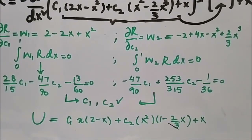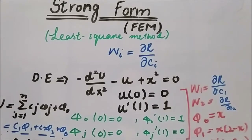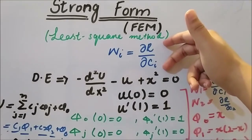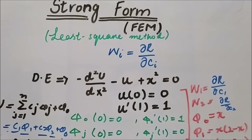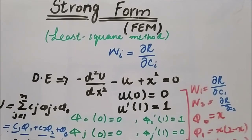This is how we can solve any differential equation with given boundary conditions using the Least Square Method. The key assumption is that the weight function equals the derivative of the residual with respect to its parameters or constants. The question often arises: which method is most suitable for a given situation? It depends on the problem — in one situation the Least Square Method may perform best, while in another the Galerkin or Petrov-Galerkin method may be more appropriate. The main purpose is always to reduce or minimize the residual error.